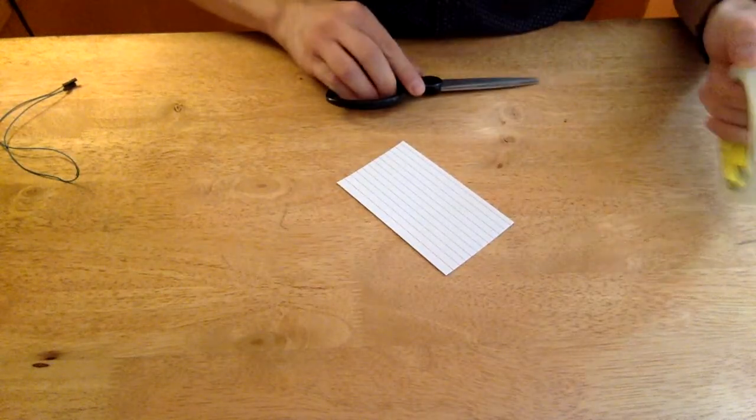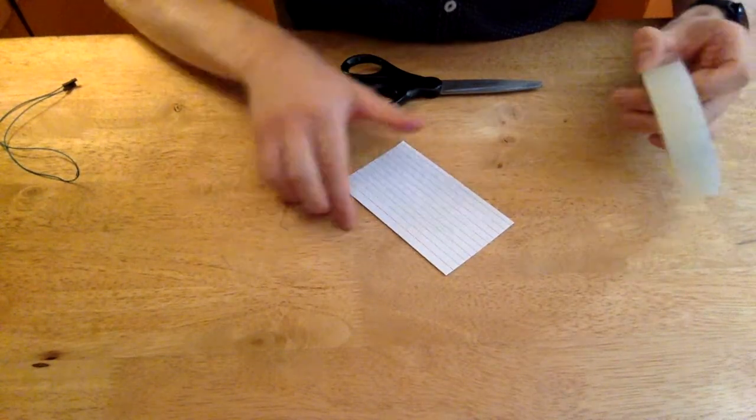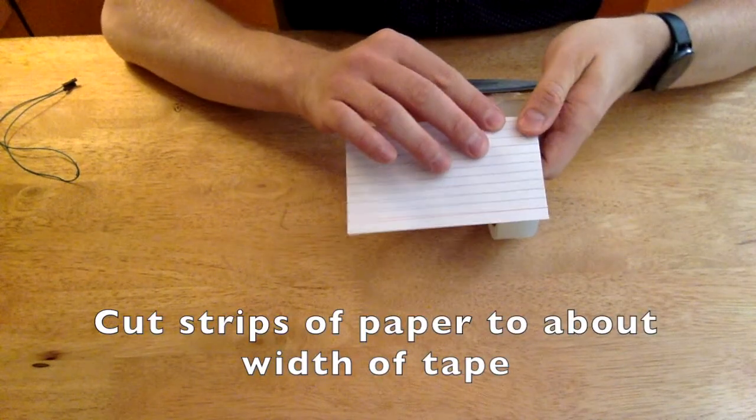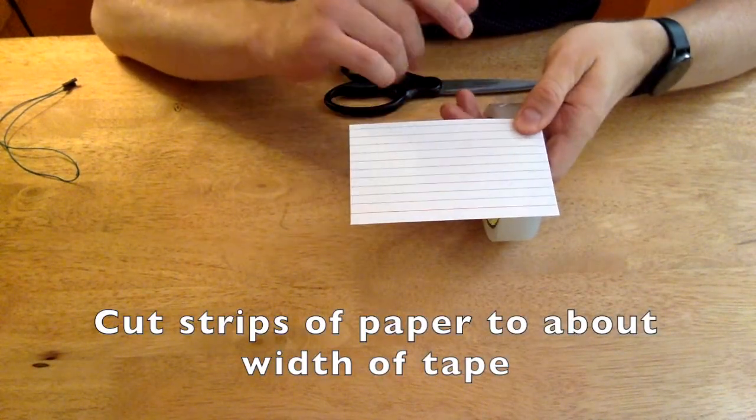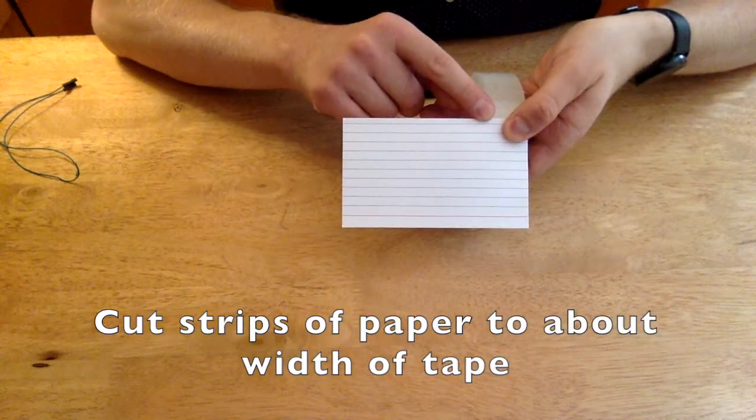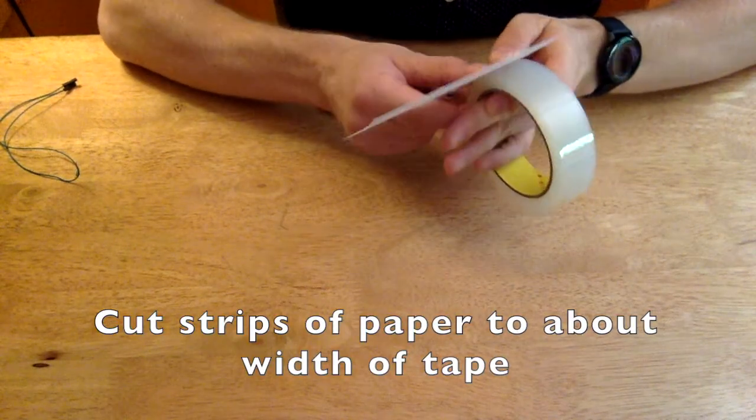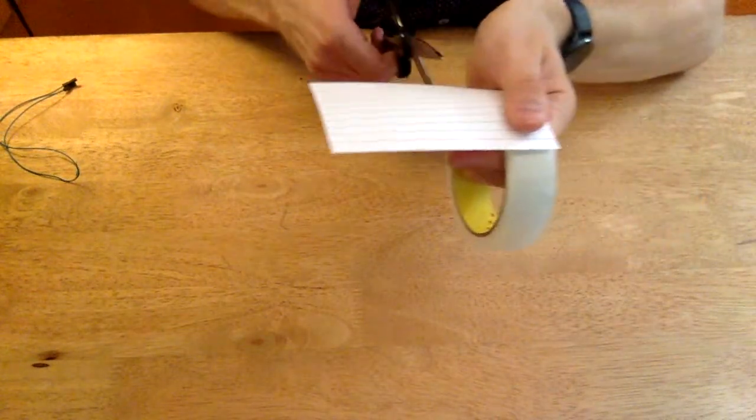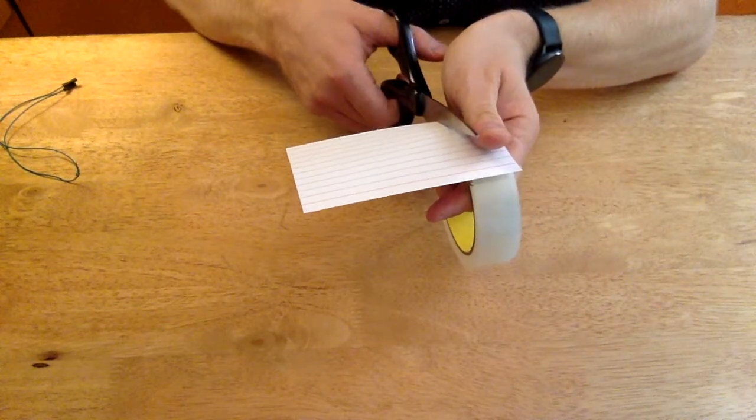And we're going to cut two strips. I recommend, to make it easy on you, cut your strip of paper about as wide as the tape that you're working with. So go ahead, get a measurement on that, see how wide your strip is and your tape, and cut the strip according to that.